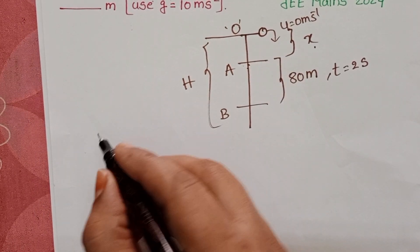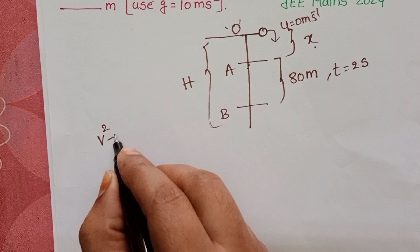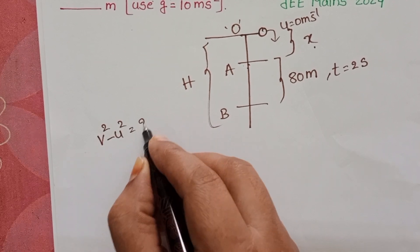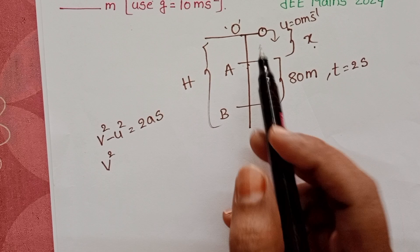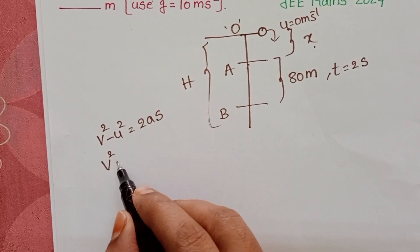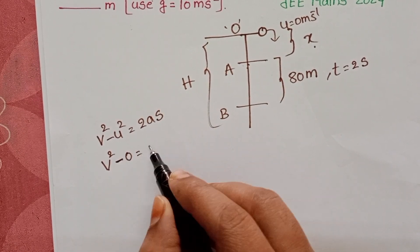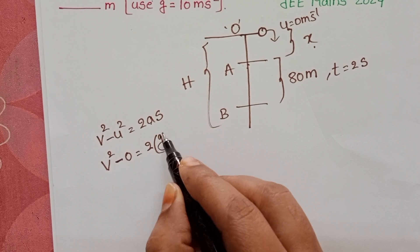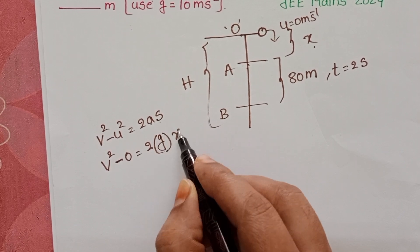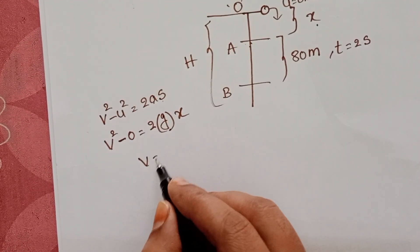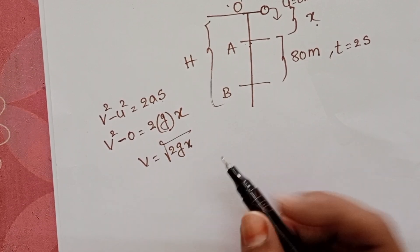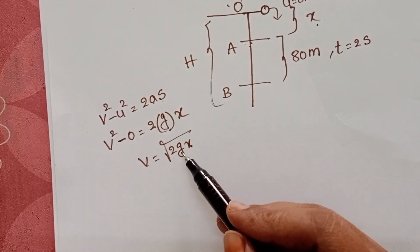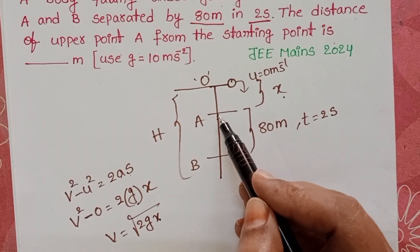Take equations of motion. V squared minus U squared equals 2AS. Initial velocity of the dropping body is 0, so 2 into A is acceleration due to gravity and S equals X. Then V equals square root of 2GX. This is the velocity of the body when it reaches point A.